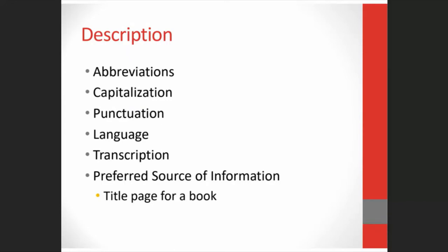Some of the things RDA talks about is when to use abbreviations, which is not very often, how to capitalize, using punctuation, and the language to use. The rules also give us instruction on transcribing information, which for most elements means copying exactly as you find it on the item. Another important thing we get from the rules is the preferred source of information, which tells us what part of the item we use as the basis for our description. For a book, we start with the title page.